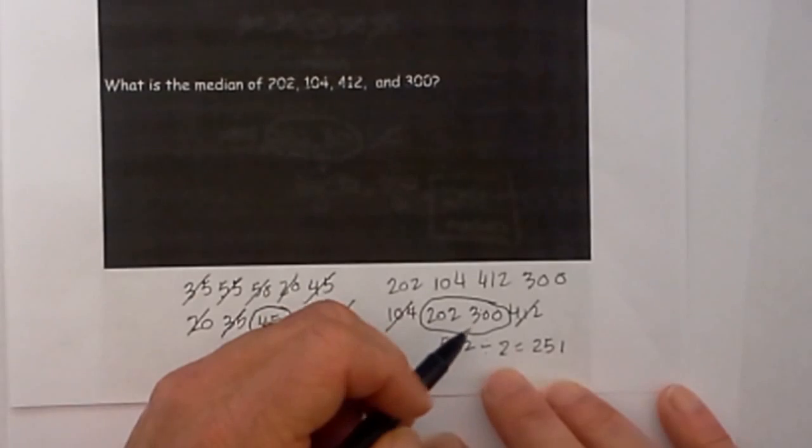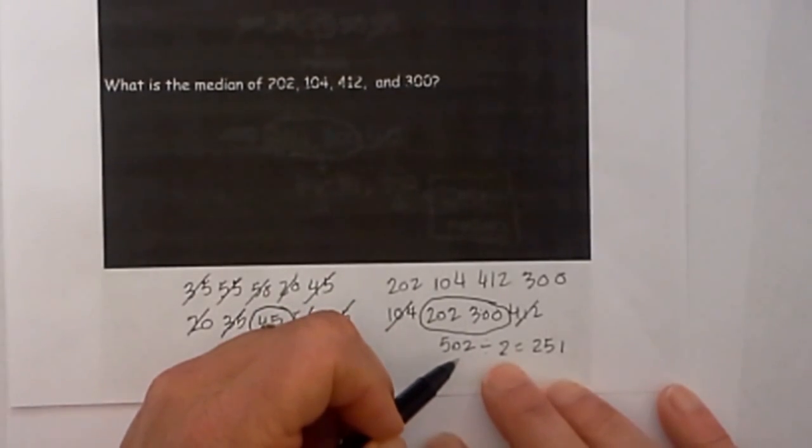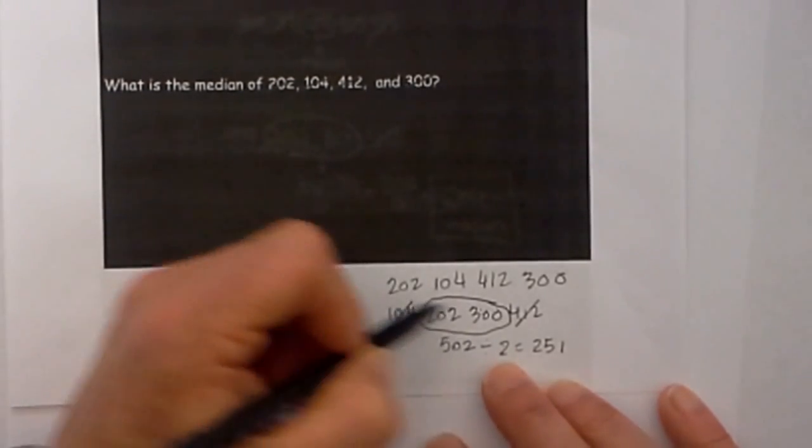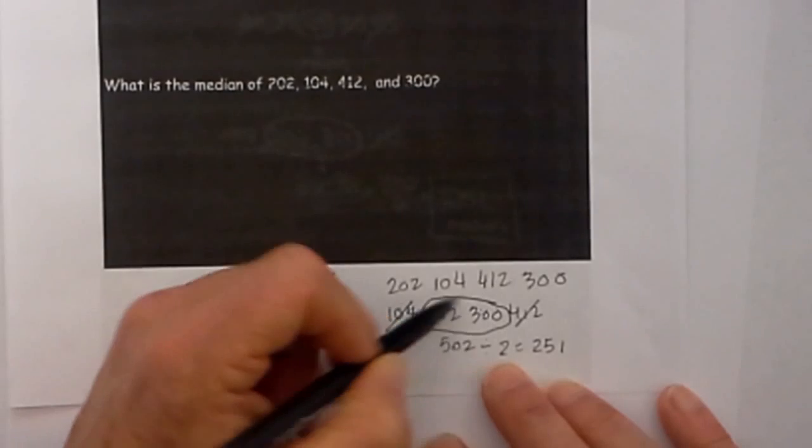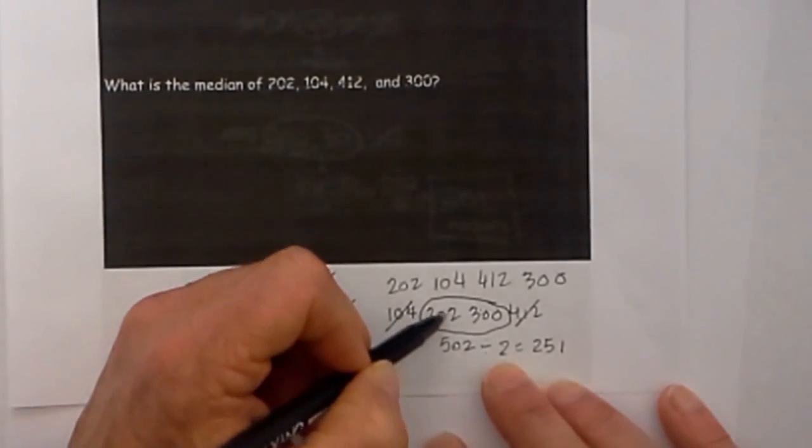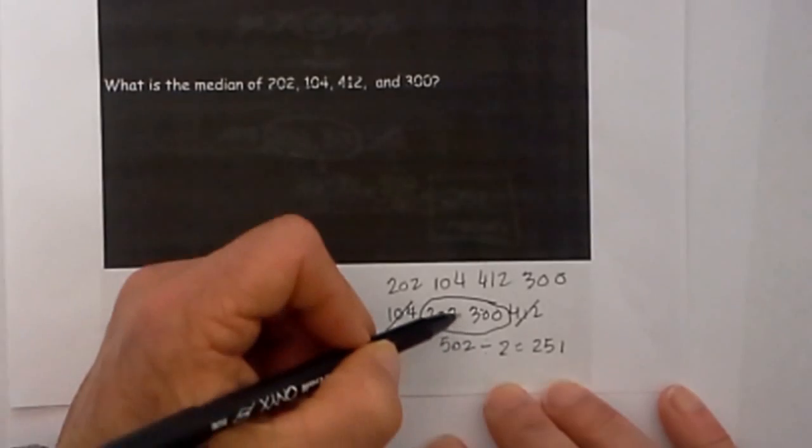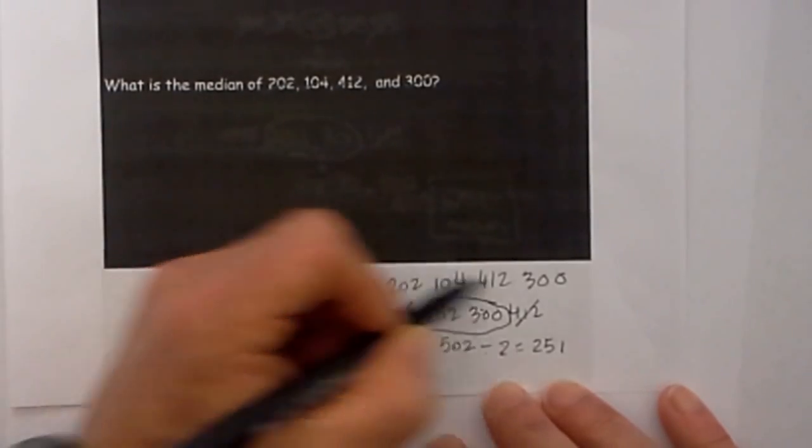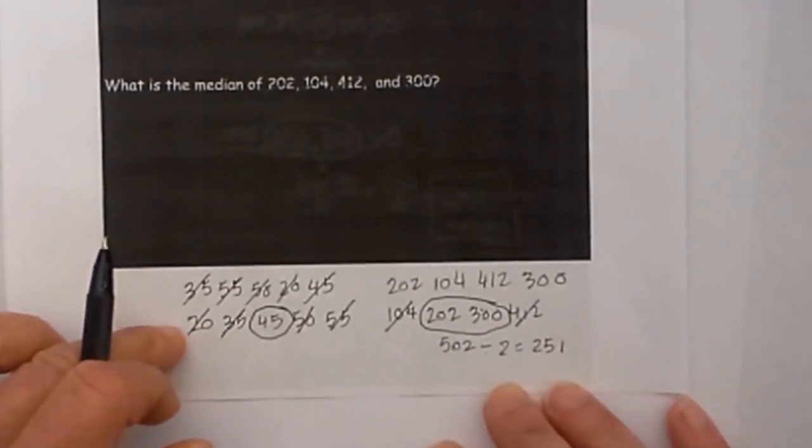Why did I use 2? Because remember when you are calculating the mean you total the numbers and divide by the number of numbers in the data set and that is 2. So anyway the median of these groups of numbers would be 251.